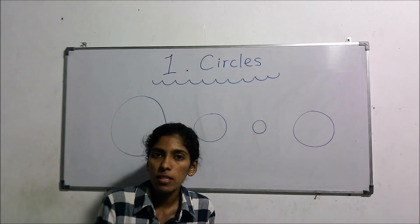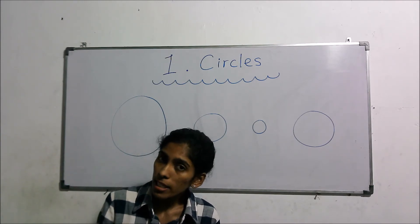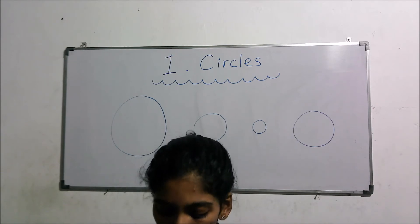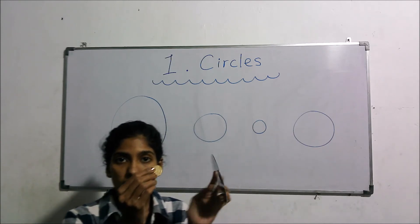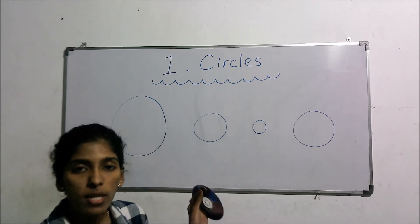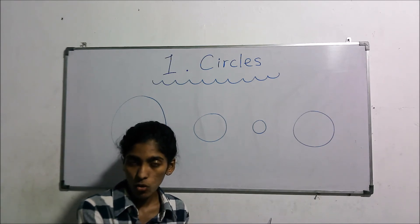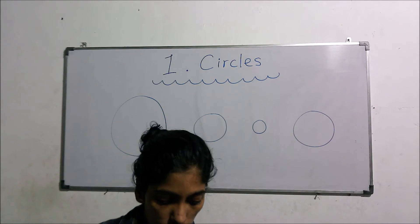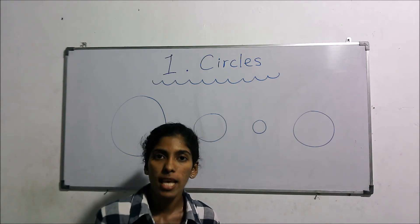By keeping spherical objects on a paper we cannot draw a circle. The objects I showed you earlier — CDs, coins, and bottle lids — with the help of those we can draw circles, as those have circular shapes. I hope you understood the difference between circular objects and spherical ones.